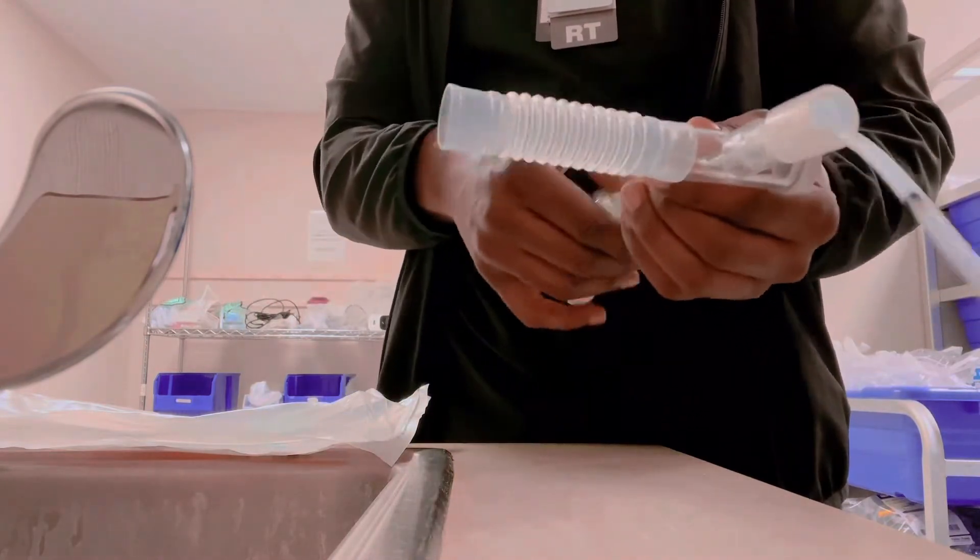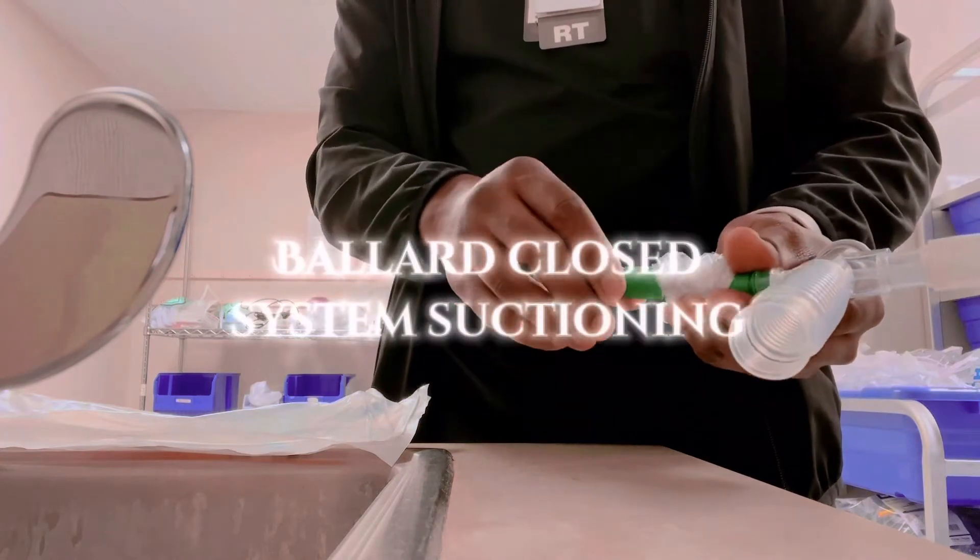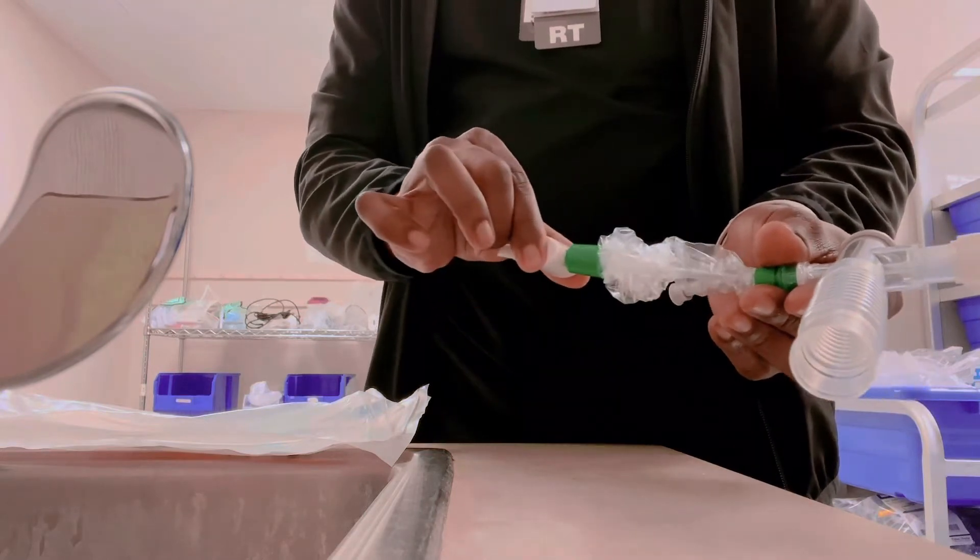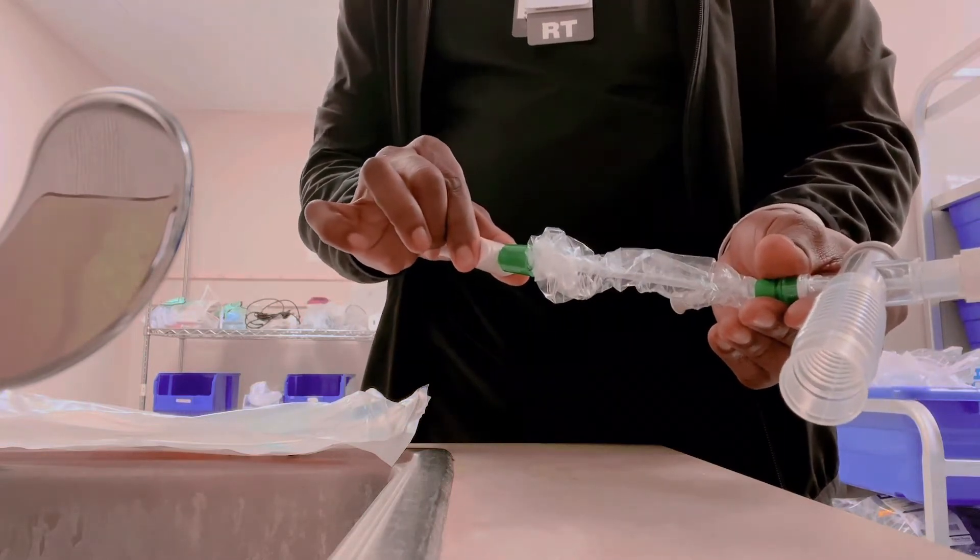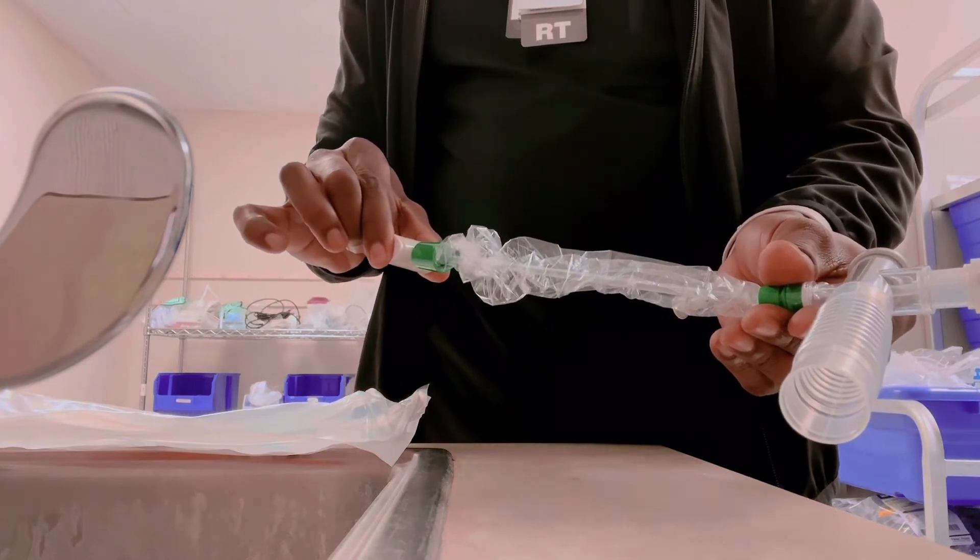Advance the catheter until you meet some resistance or get down to the carina. Press the button while slowly withdrawing it through the patient's airway, through the trachea.